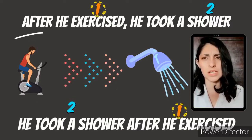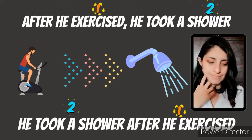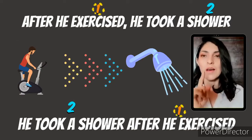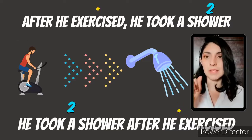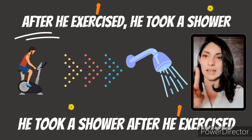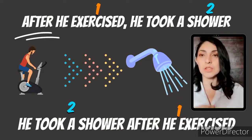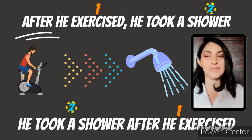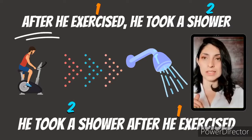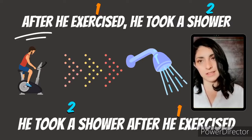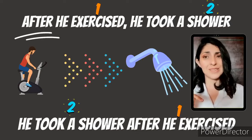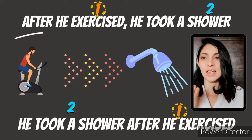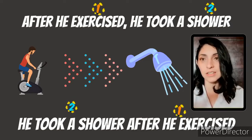So, let's think — which action do you think happens first? I think he exercised first, and then he took a shower. That's why you have a number one on top of 'exercise,' because that's going to be the first action, and then he took a shower — that's the second action. You can realize that you can switch them, and that's not going to change the meaning of the sentence at all.